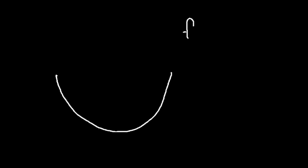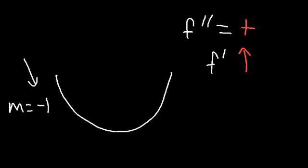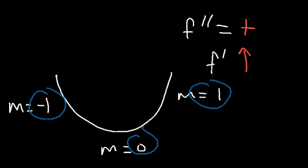Now for the concave up situation: the second derivative is positive, which means the first derivative must be increasing. The slope on the left side is negative because the function is decreasing. At the bottom the slope is zero, and on the right it's positive one. From left to right, the slope increases from negative one to zero to one. Therefore this is concave up and the second derivative is positive.